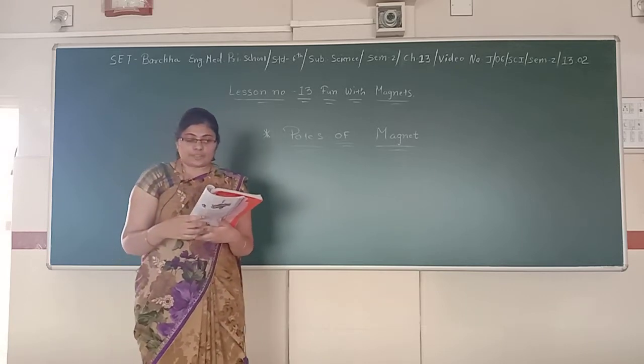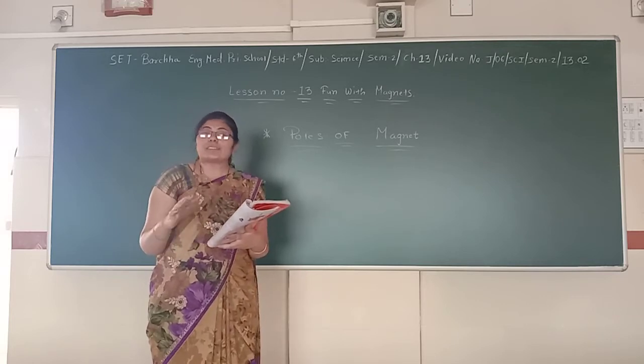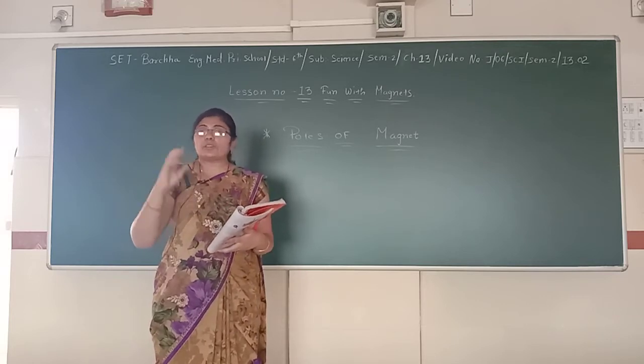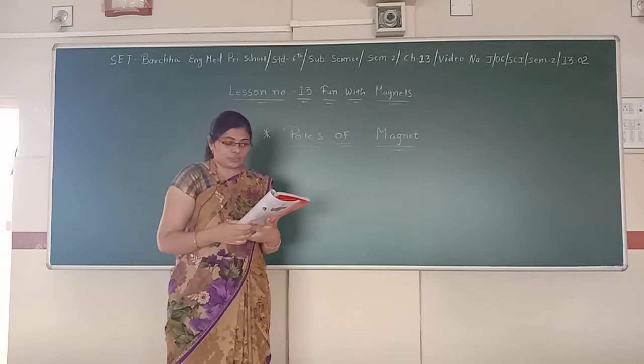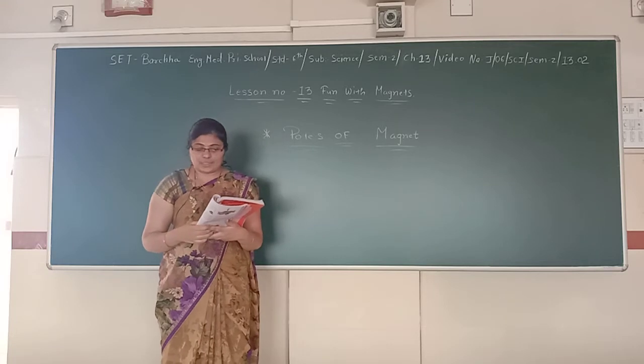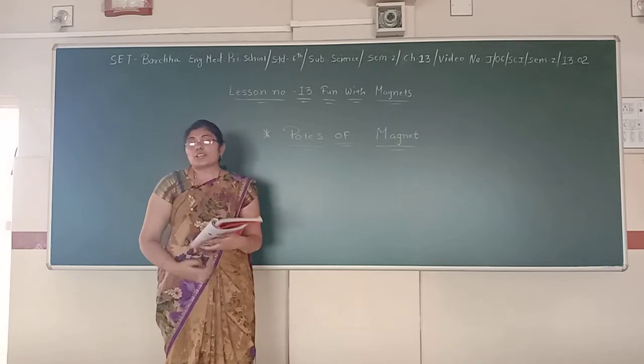Do you observe any change in the pattern with which the iron filings get attracted by the different parts of the magnet? No, it remains the same. It always gets attracted or sticks to the end of the pole. You can do this activity using pins or iron nails in place of iron filings.